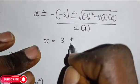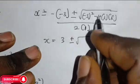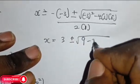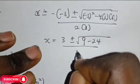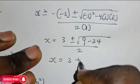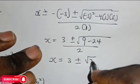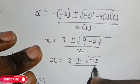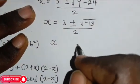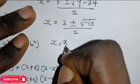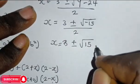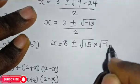This gives us 3 plus or minus root of minus 3 squared, which is 9, minus 24, divided by 2. So we have x equals 3 plus or minus root of minus 15, divided by 2. We can write this as s equals 3 plus or minus root 15 multiplied by root of negative 1, divided by 2.